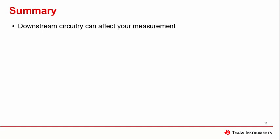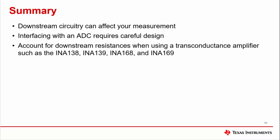In summary, checking downstream circuitry is an important step to the debug process. It may not seem like a likely culprit in causing issues, but knowing what to look out for will help avoid these pitfalls. When interfacing with an ADC, it is important to understand the output limitations of the current sense amplifier and the needs of the ADC to capture accurate measurements. When working with transconductance amplifiers, it is necessary to account for downstream resistances, especially when trying to use them in conjunction with other circuitry.